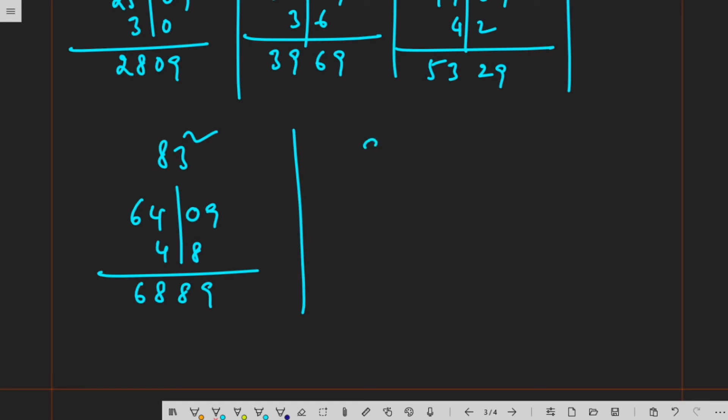Next, 93 square: 9 square is 81, 3 square is 09, and 9 times 6 is 54 - 86, 49. So 8,641.